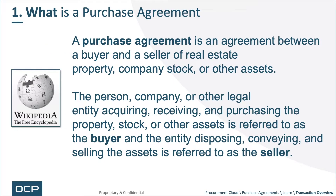What is a purchase agreement? A purchase agreement is an agreement between a buyer and a seller of real estate, property, company stock, or other assets as defined by Wikipedia. The person, company, or other legal entity acquiring, receiving, and purchasing the property, stock, or other assets is referred to as the buyer, and the entity disposing, conveying, or selling the assets is referred to as the seller. In Fusion, the purchase agreement aligns with that contract, but it's the software construct that enforces controlling elements — such as which business unit the agreement is for, minimums and maximums at a line or header level — serving as the enforcing construct for the paper contract.